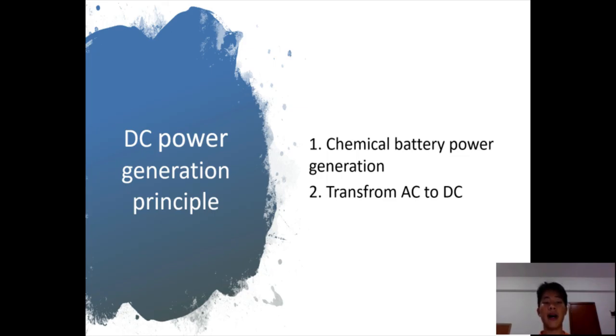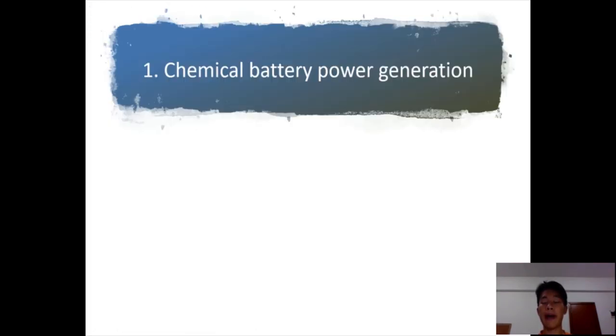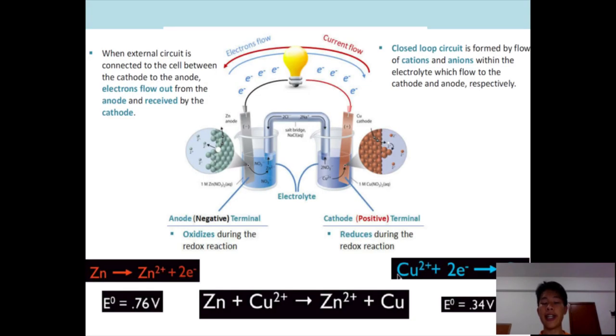Now, for the second part, I'm going to talk about DC power generation. There are two ways to generate DC power. First is to use chemical battery to generate DC power. And the second is to transform AC to DC power.